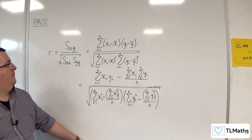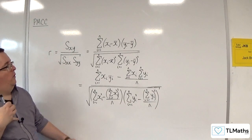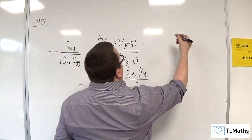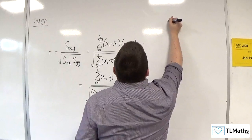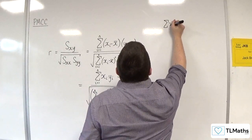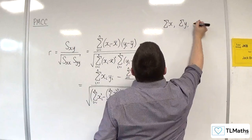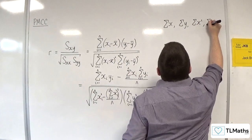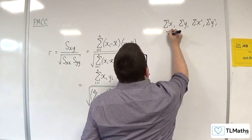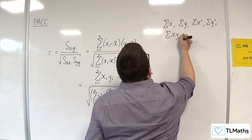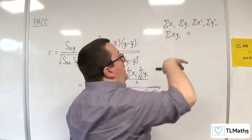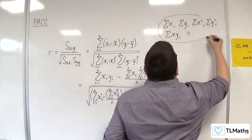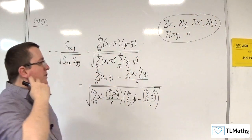Now, how a question will be formed from this will be, you will be given the summary statistics. So you will be given sum of X, sum of Y, sum of X squared, sum of Y squared, the sum of XY and N. So you'll be given that. That's your summary statistics. And then we're going to need to substitute them into the formula.